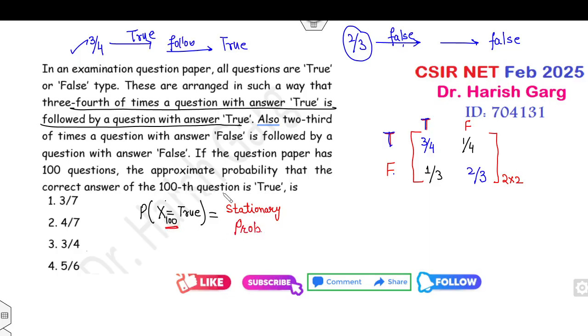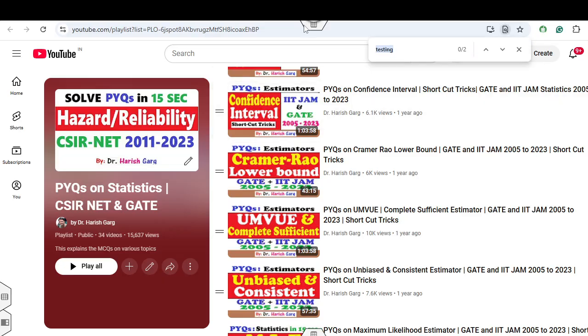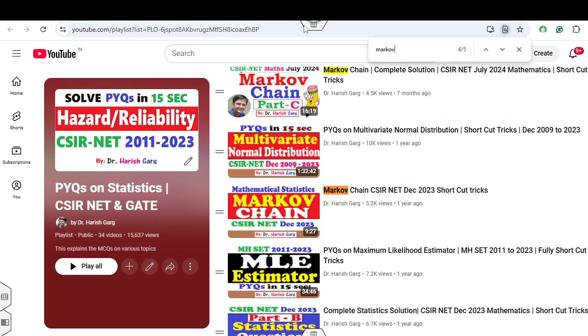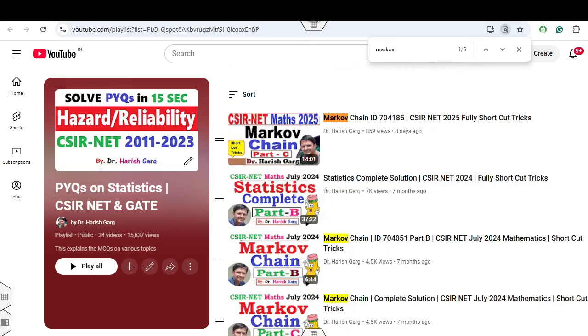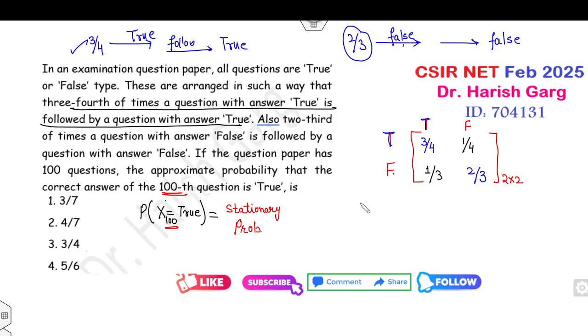Why is it the stationary probability? Because the time period, the 100th question, is a very large number. How can you find the stationary probability? If you already watched my Markov chain lecture, this lecture Markov chain PYQ questions complete series, then you can analyze how you can solve 2 cross 2.